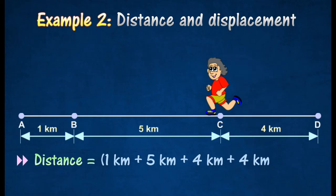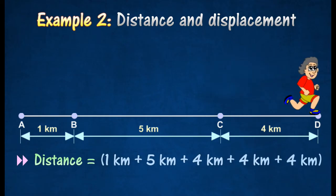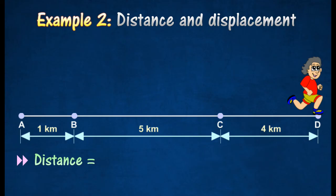On reaching C, he reverses his direction again and finally stops at D. The distance traveled by this runner came to 18 kilometers,